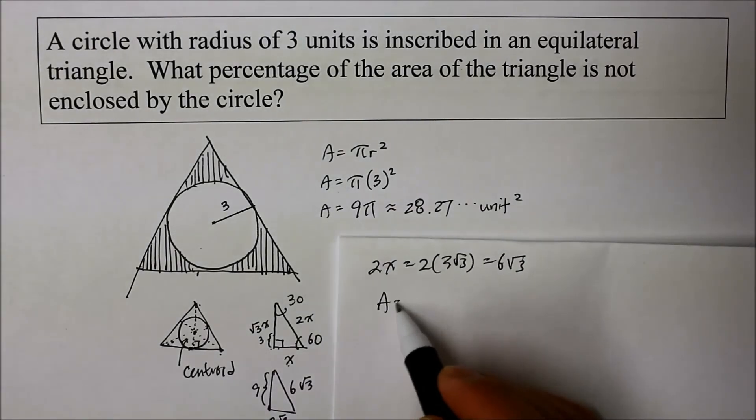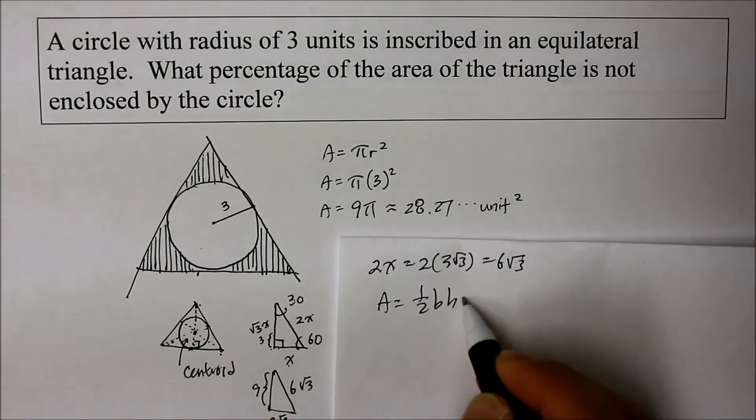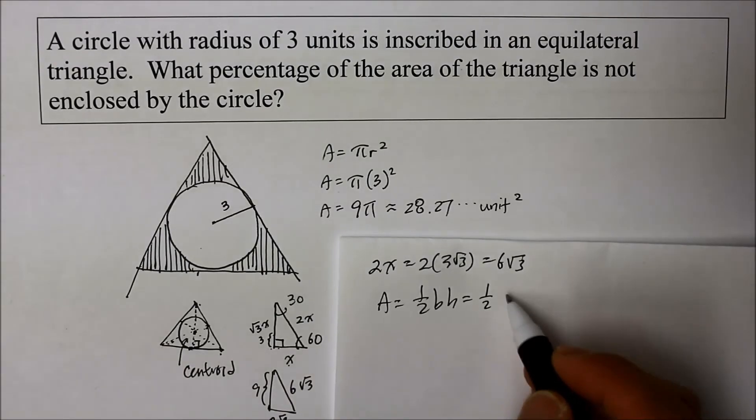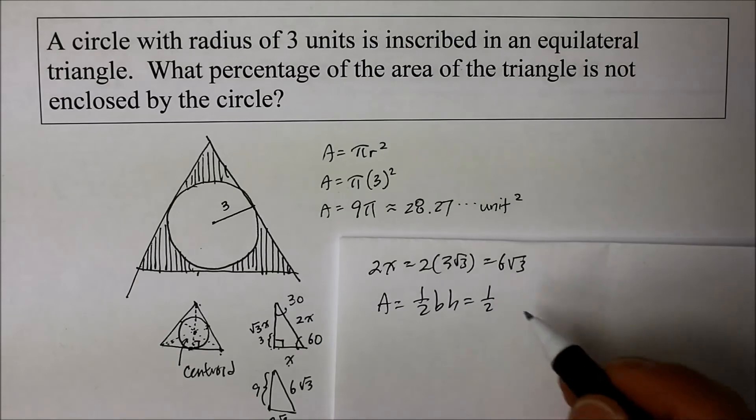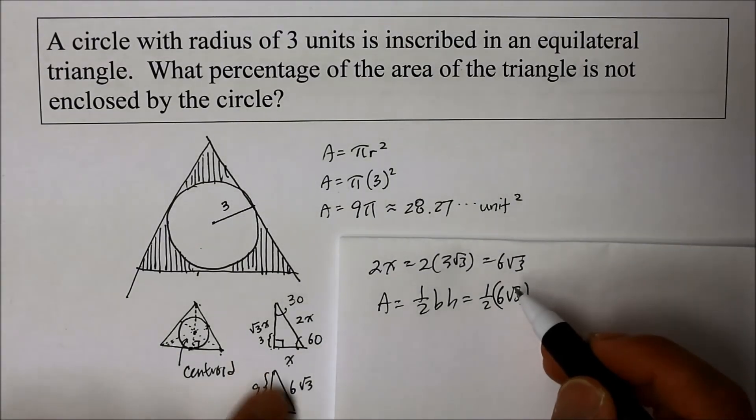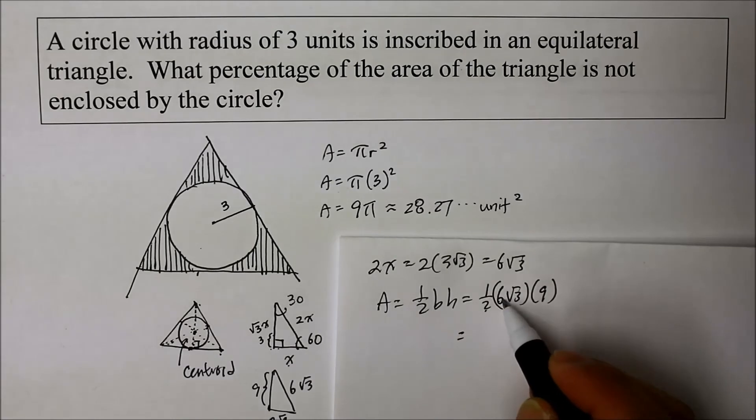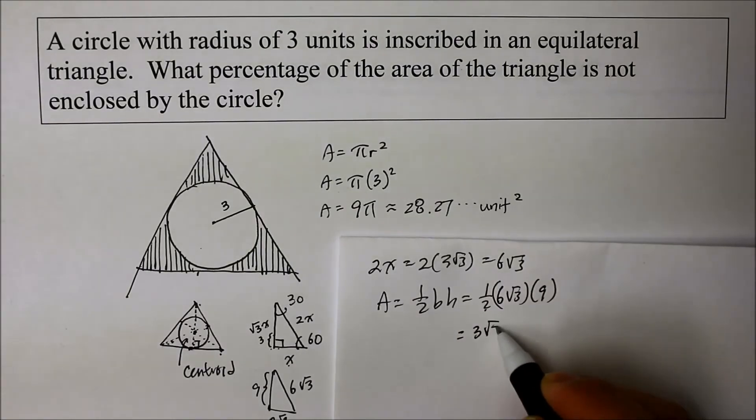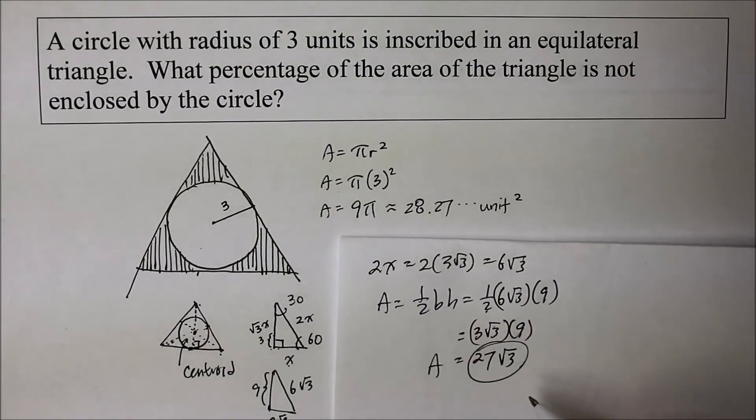So find the area of a triangle. We didn't really need to know that. It's one half base times height. Therefore, one half times base is now the full length, which is double this one, which is six square root of three, which is same as the hypotenuse, because it's an equilateral. And the height is nine units. Half of the coefficient six is three square root of three times the height, which is nine. Therefore, it's twenty-seven square root of three. That's the area of the triangle.